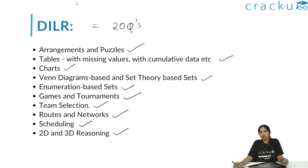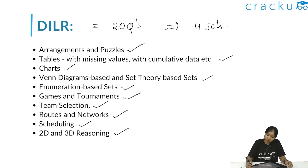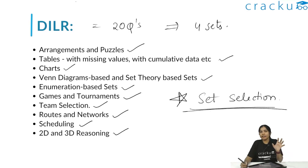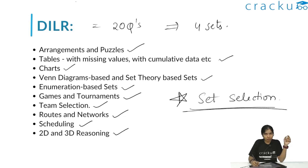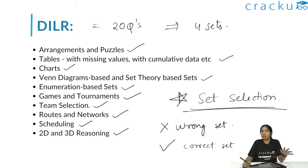In DILR, you'll be asked 20 questions across four sets. Time management and logical thinking are critical, and one of the most important factors is set selection. If you select a wrong set, it will kill your time and affect your overall score. So it is essential to select the right set to maximize your score.